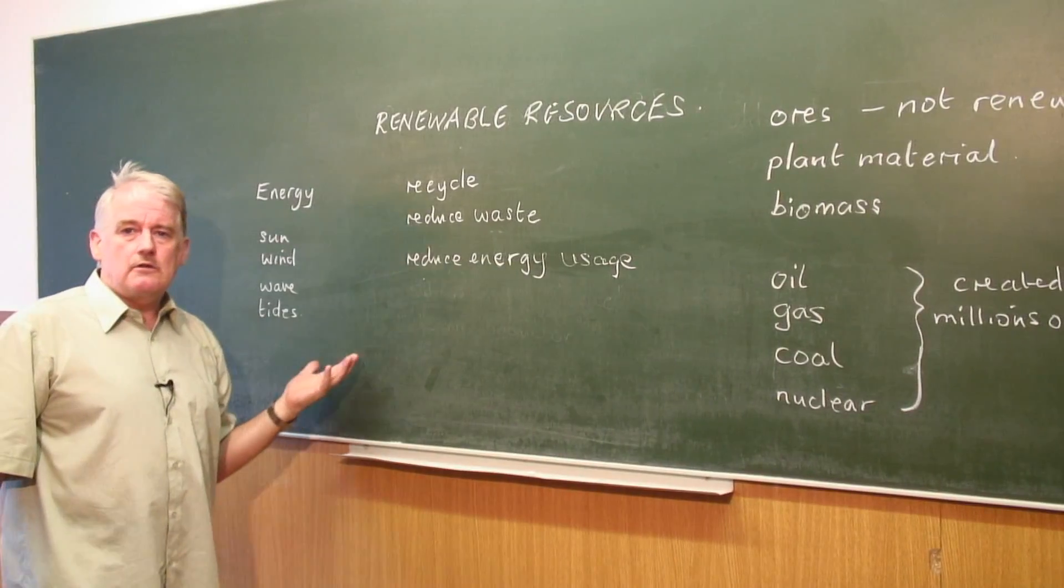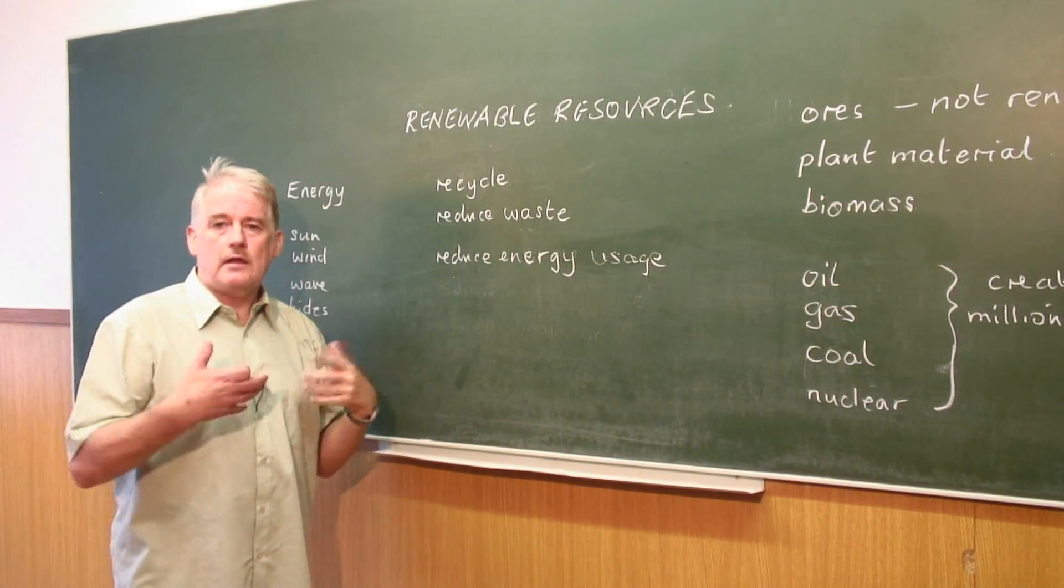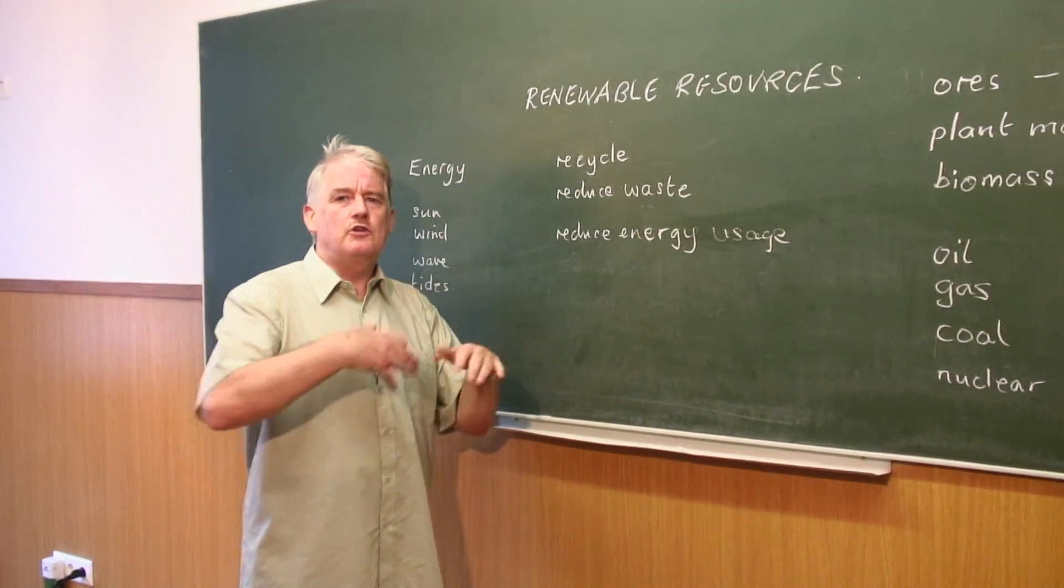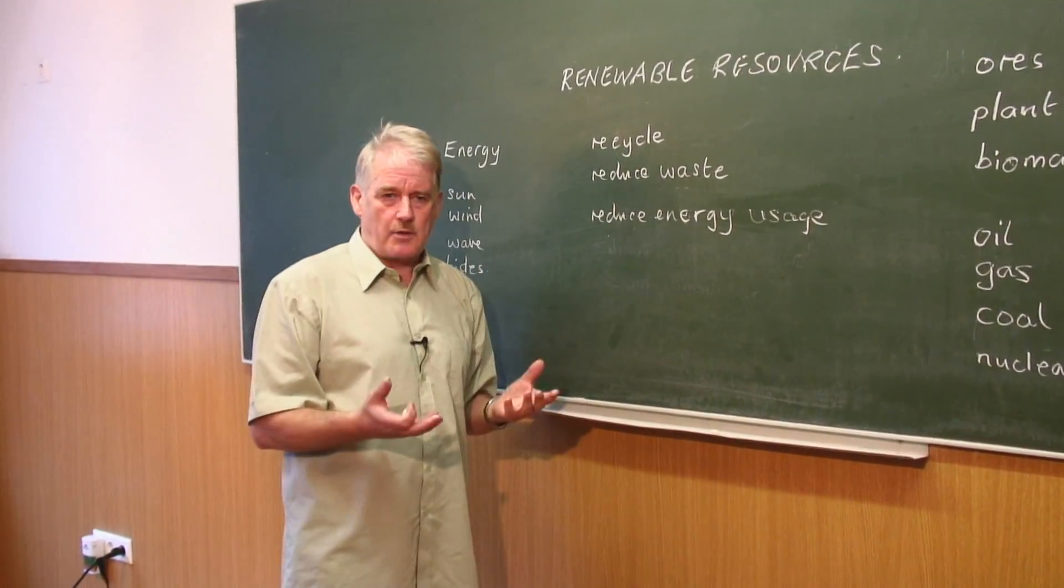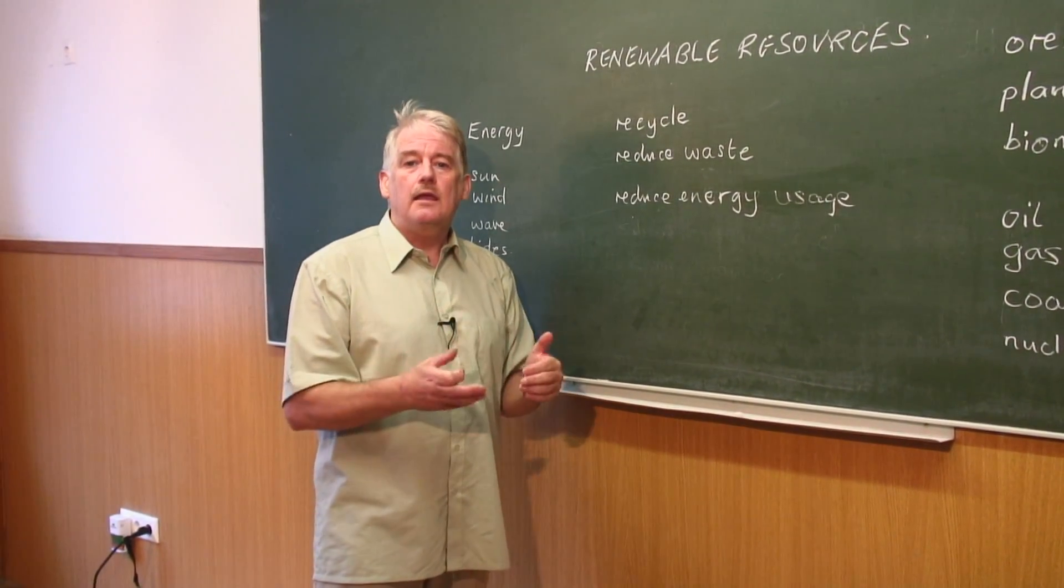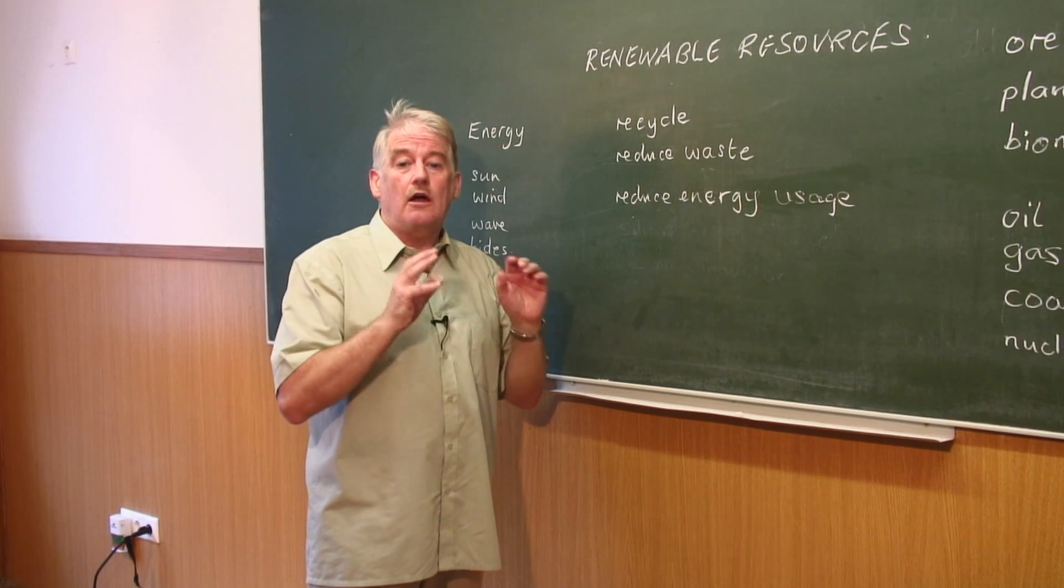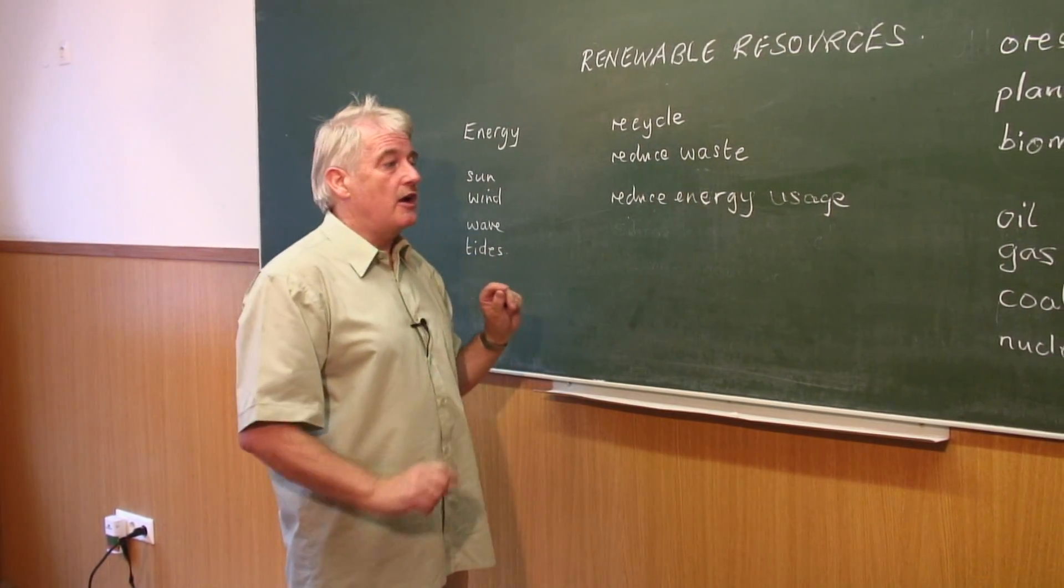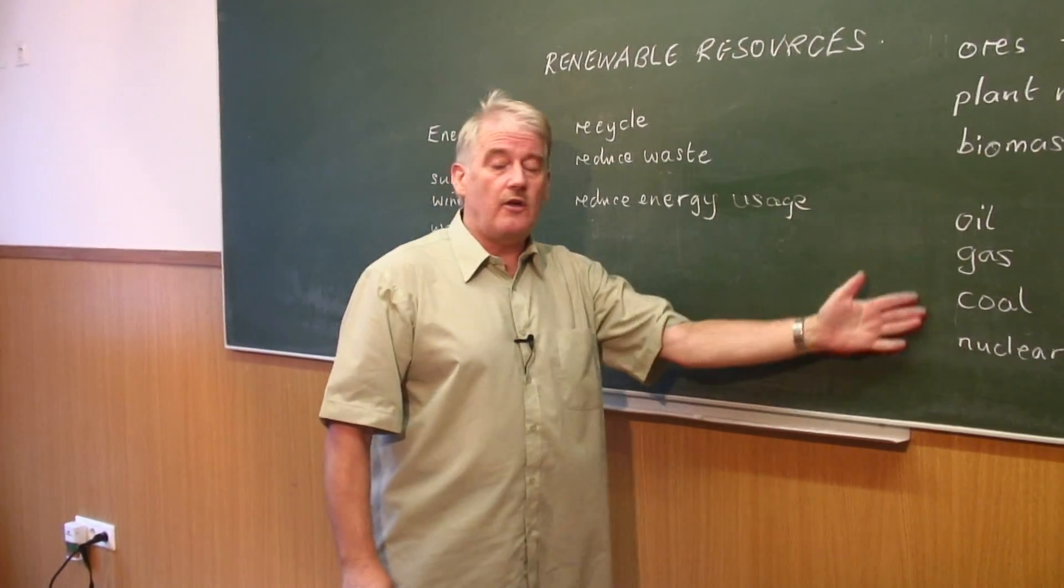If I make a bicycle, I have to melt the metal, which takes energy. I have to put it together and create the rubber. Everything I make uses up energy. If I can reduce the amount of energy I use, I will save on these resources.